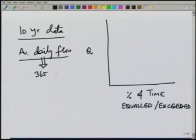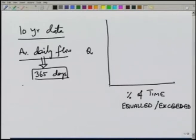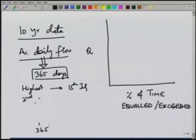Let us take an example with daily data. If we have obtained the average daily flow for all 365 days of the year, we have 365 values of daily discharges. We can arrange them in descending order, so the first value would be the highest — this may occur, say, on 15th July. We then go to the 2nd highest and so on. This way we arrange all 365 data points in descending order and assign a rank to them: rank 1 for the highest, rank 2 for the next, and so on through 365.